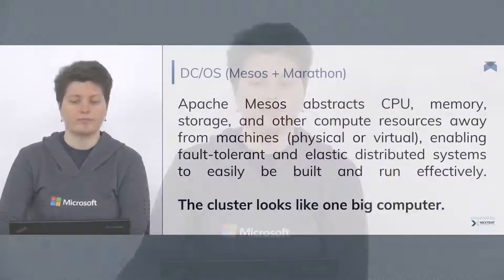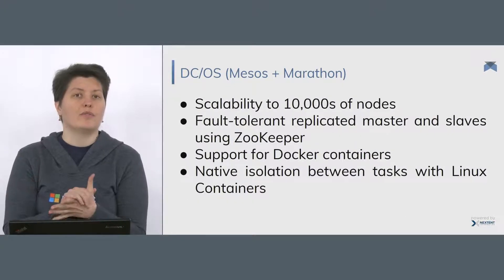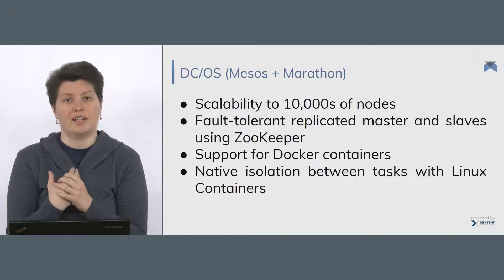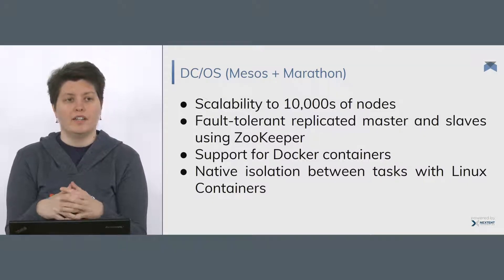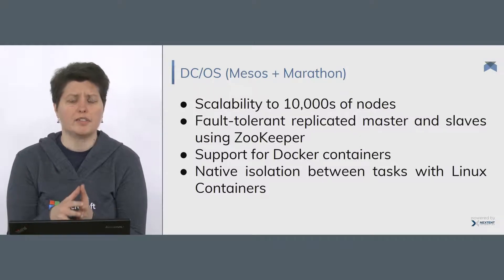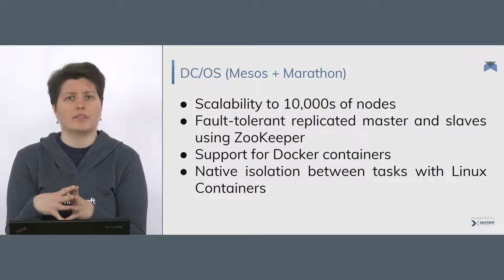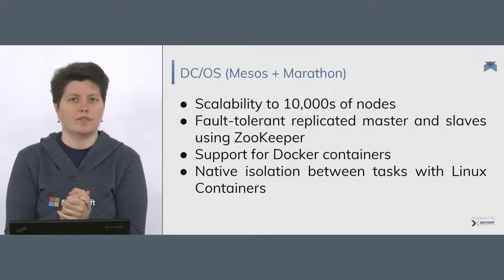For example, if you have four servers with four gigabytes of RAM and four CPUs, you will see 16 gigabytes of RAM and 16 CPUs in total. Why is DCOS good? First of all, if you would like to scale up to 10,000 nodes, then this is the orchestration system for you. It is highly available, it is fault tolerant, it uses ZooKeeper, it natively supports Docker containers, and it provides isolation between Linux containers.